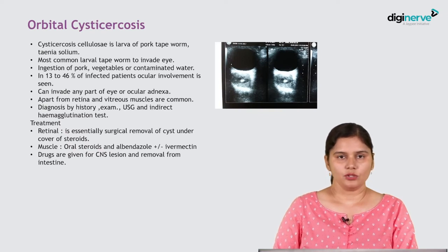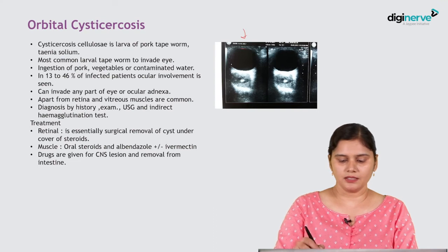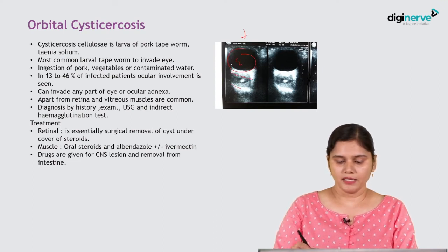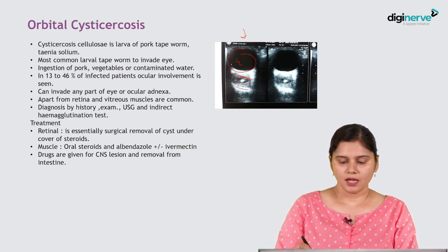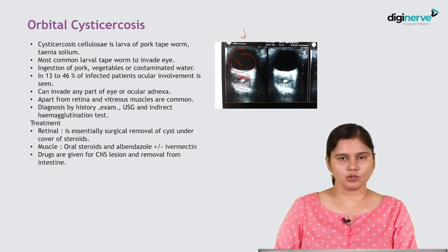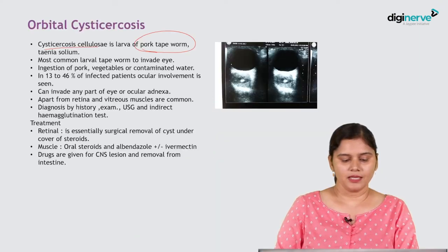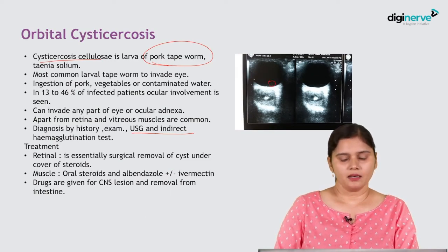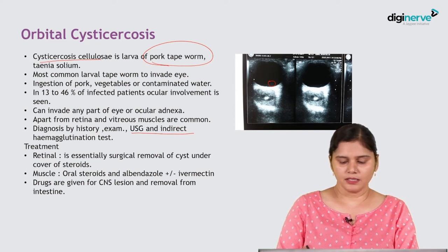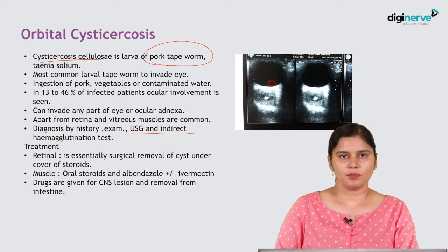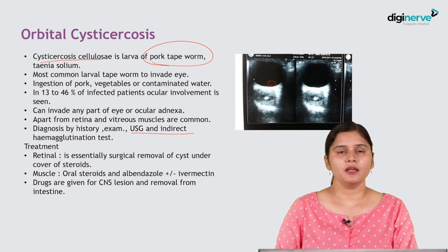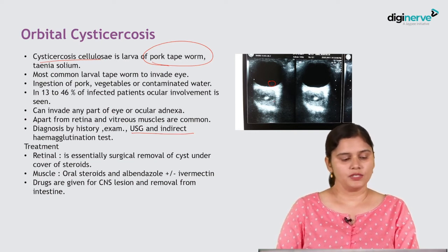Orbital cysticercosis is also common. On imaging, inside the muscle behind the eye, a cyst is visible with a hyperintense lesion inside, which is the scolex of cysticercus cellulosae — the larvae of the pork tapeworm Taenia solium. They can invade the eye or be present in the muscle. Diagnosis is made on history, examination, and ultrasound. If present in the muscle, oral steroids with albendazole plus or minus ivermectin are given. If in the retina, vitreous surgery is required to remove the subretinal cyst.